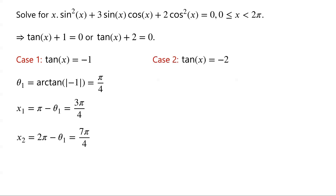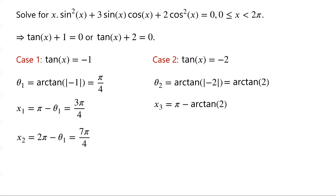Case 2: tan of x equals negative 2. Again, there are two solutions for case 2 — one in quadrant 2 and the other in quadrant 4. Let theta 2 equal arctan of the modulus of negative 2, which equals arctan of 2. The solution in quadrant 2 is pi minus theta 2, which equals pi minus arctan of 2.